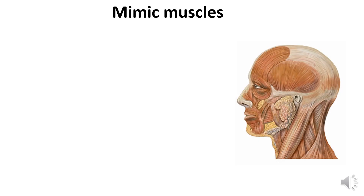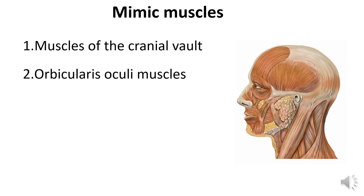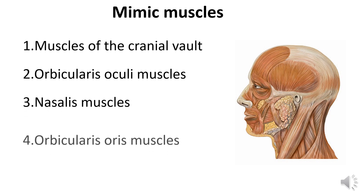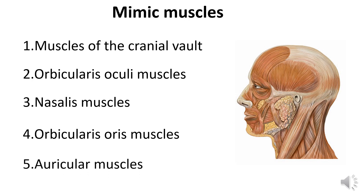According to their location, mimic muscles are divided into: muscles of the cranial vault, orbicularis oculi muscles, nasal muscles, orbicularis oris muscles, and auricular muscles.